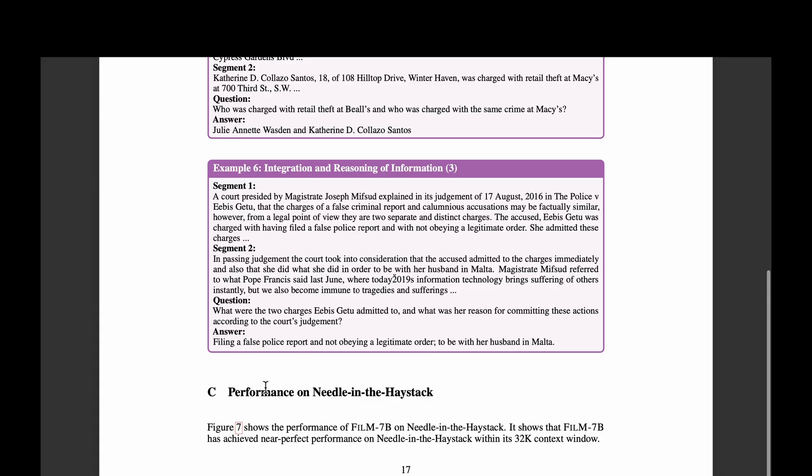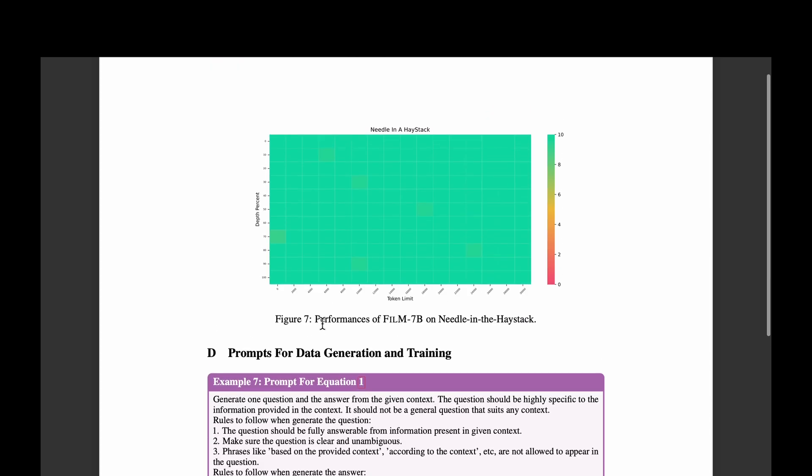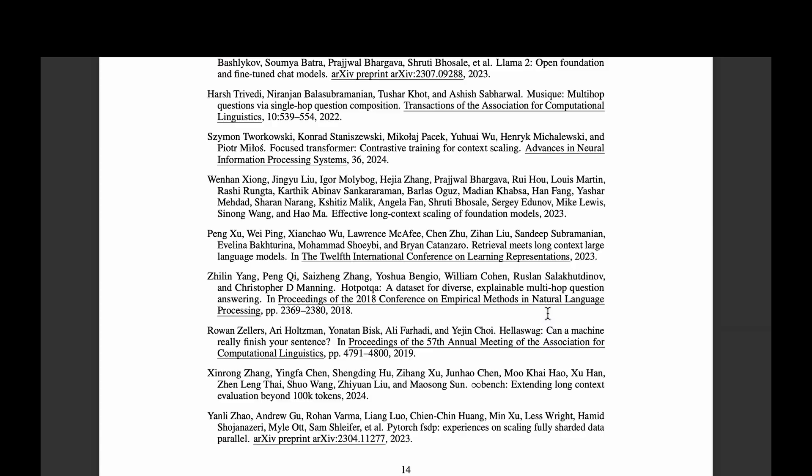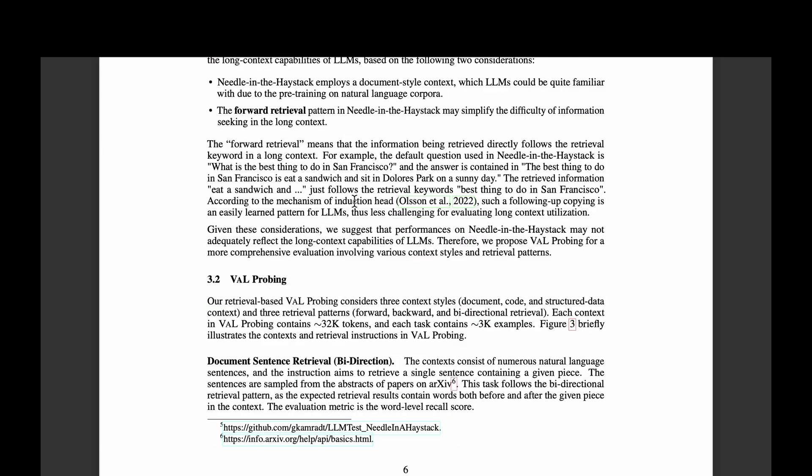One of the biggest problems with this needle in the haystack in recent days is that the models are getting so good that the performance on this needle in the haystack is getting to a near perfect performance. For example, if we look at the figure that they have given, we could see that on a scale of zero to 10, the performance of the proposed FiLM 7B model is green throughout. So that is not a good metric to evaluate a model. So as a workaround or as a solution, this paper proposes what is called the VAL probing.